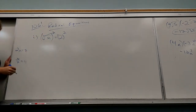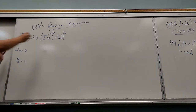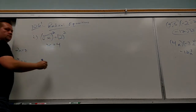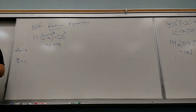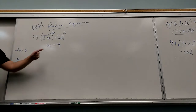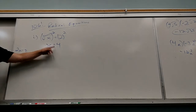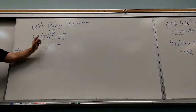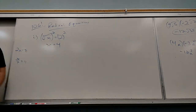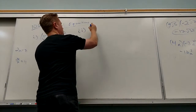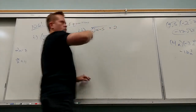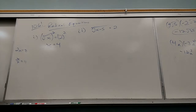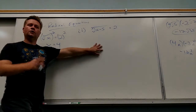Over here the square root and squaring cancel. What's √x times √x? Just x. And 2 squared is 4. Let's check it — what's the square root of 4? It's 2. Now some people might put plus or minus 4 — but plus or minus is no good. What's the square root of negative 4? We don't know yet. It's not real. The square root of negative 4 is not real, so the answer can't also be negative 4.